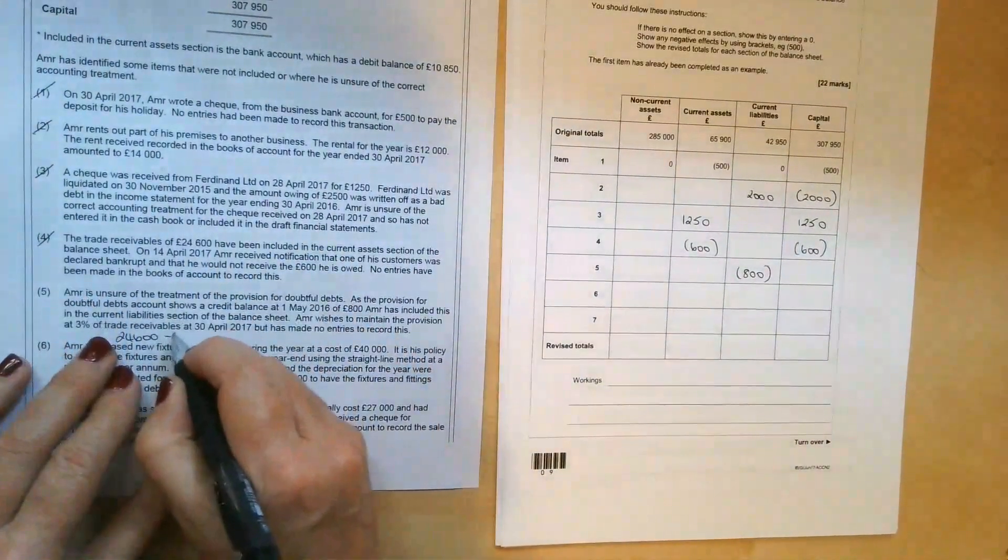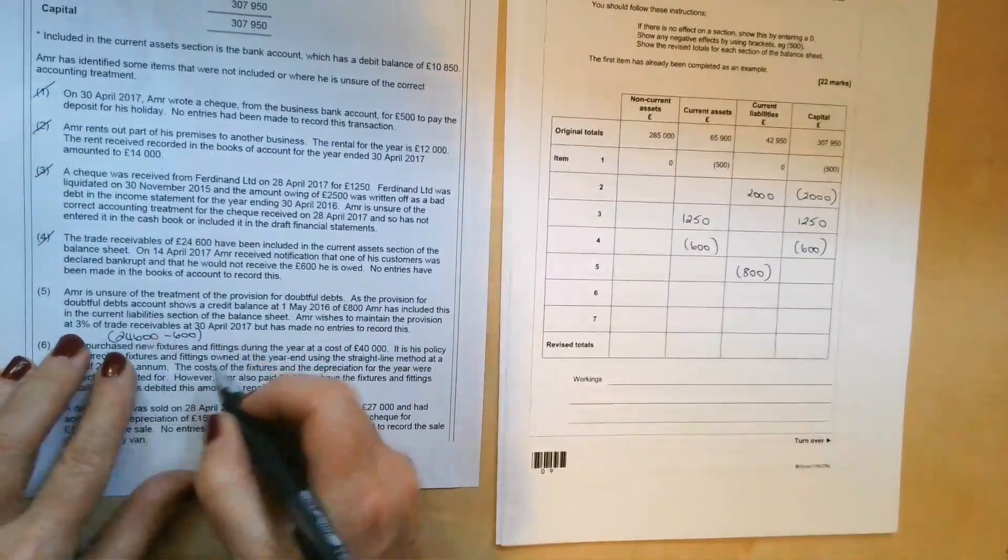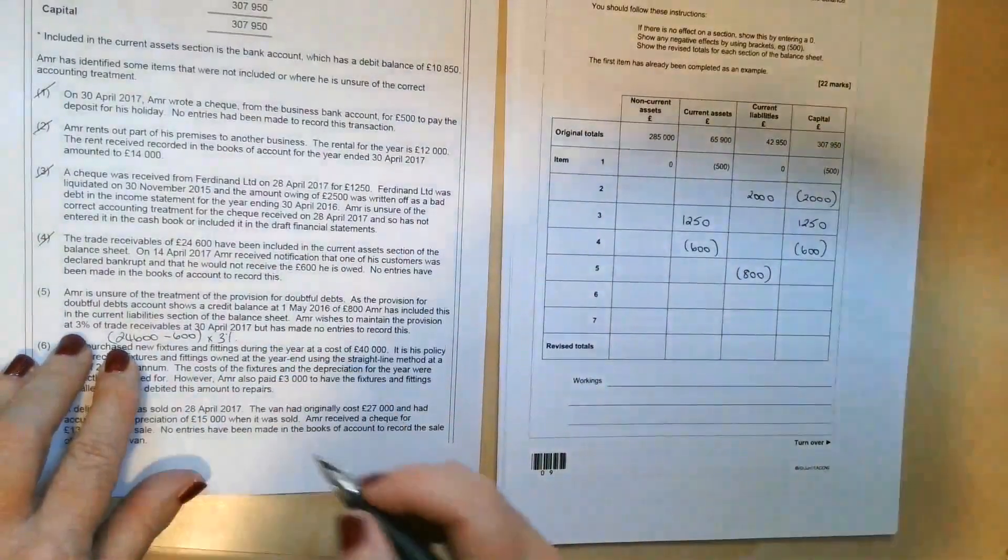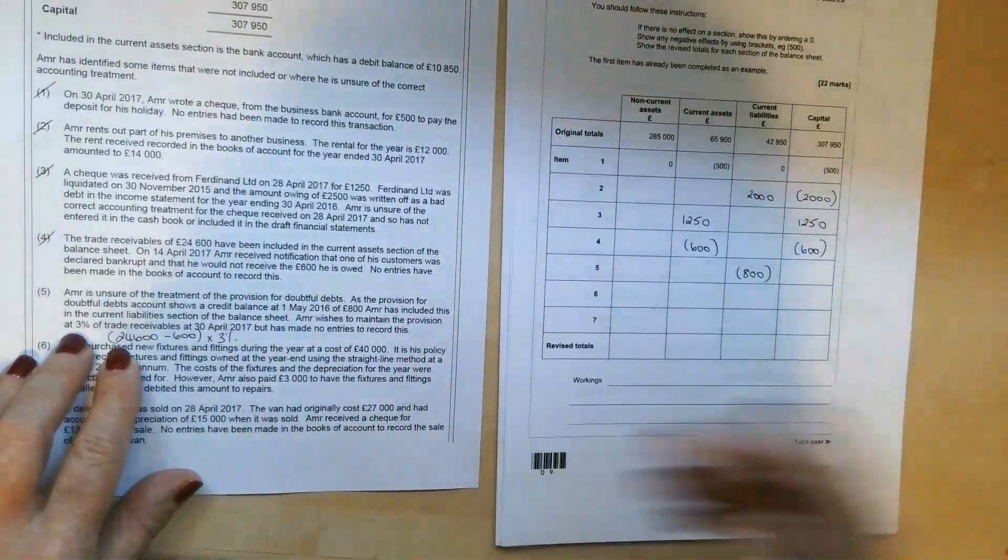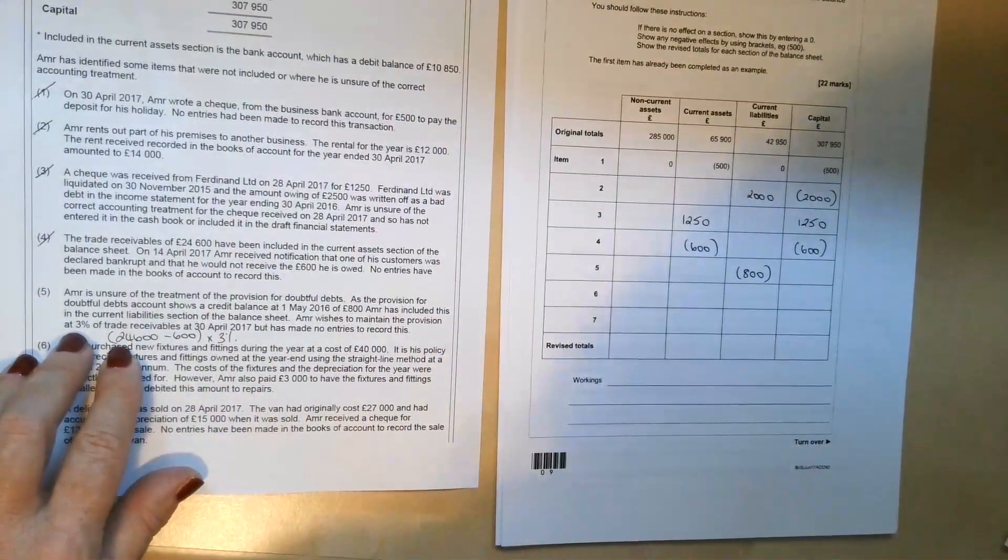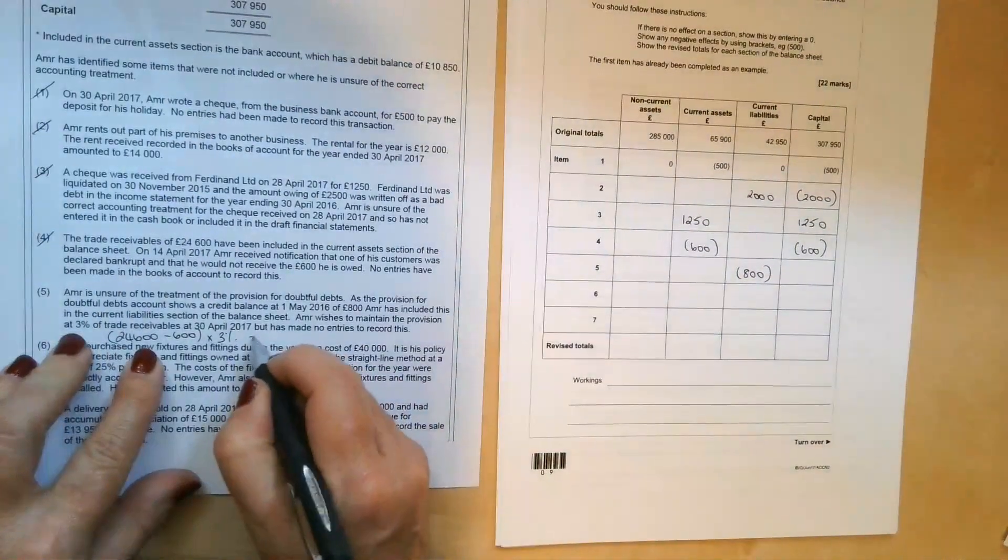So we're going to apply that 3% to £24,000, which is going to be, let's do that on the calculator, trust in my mental arithmetic, £720.